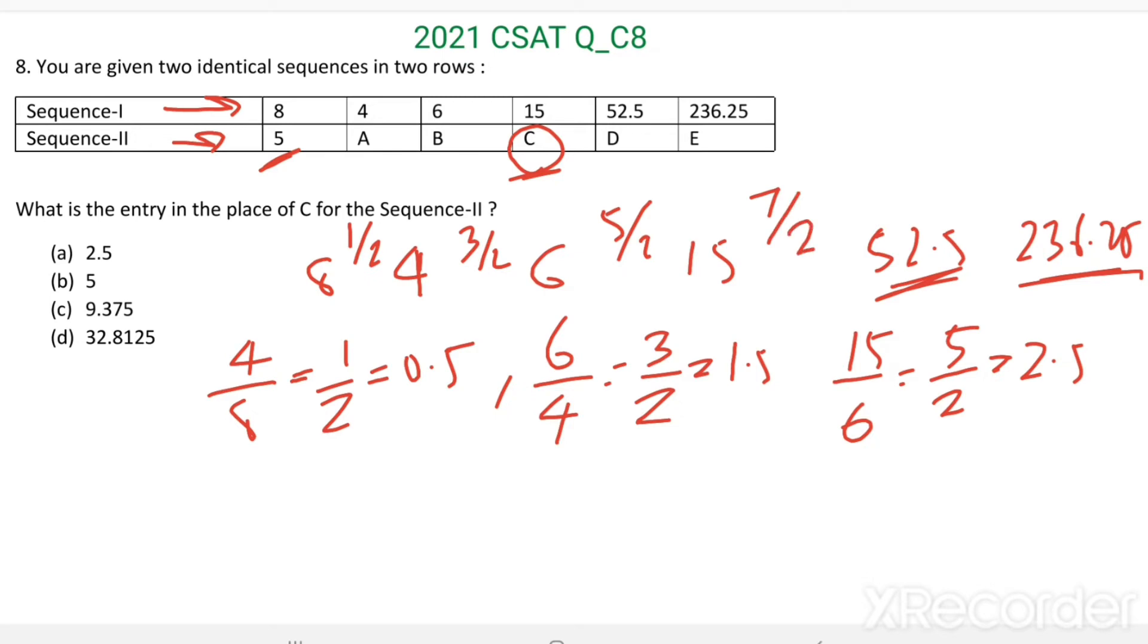Here 4.5, that is equal to 9/2. So this is the pattern followed by Sequence 1.